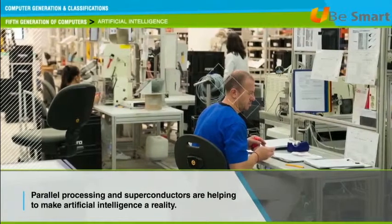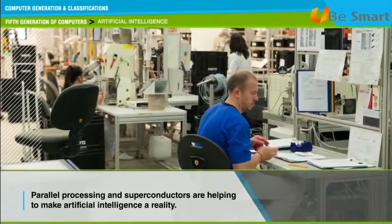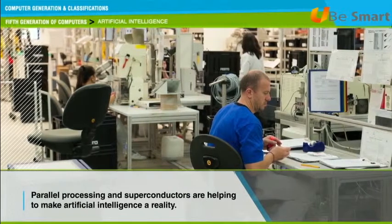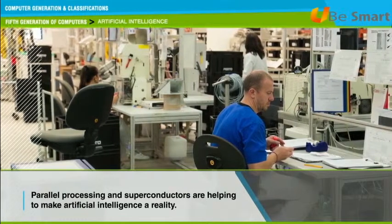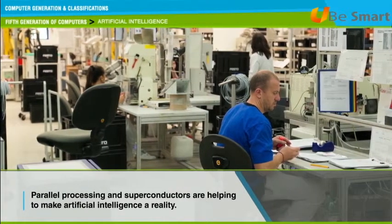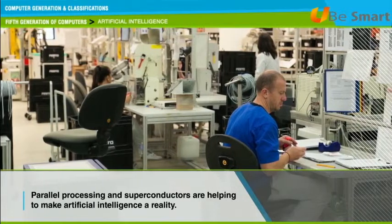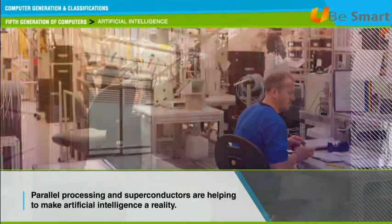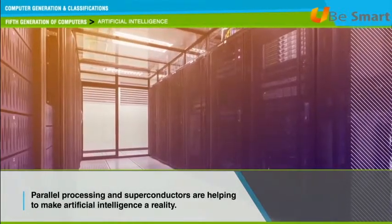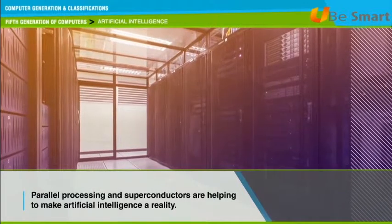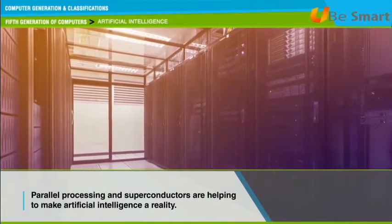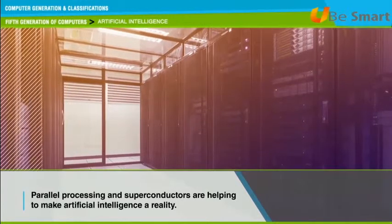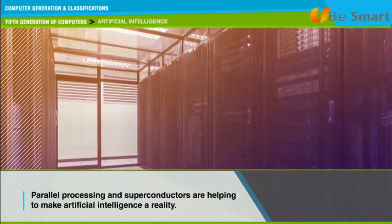Parallel processing and superconductors are helping to make artificial intelligence a reality. Parallel processing is the process of using more than one CPU simultaneously to execute a program. It makes a program run faster because there are more engines, though in practice it is often difficult to divide a program without the parts interfering with each other.